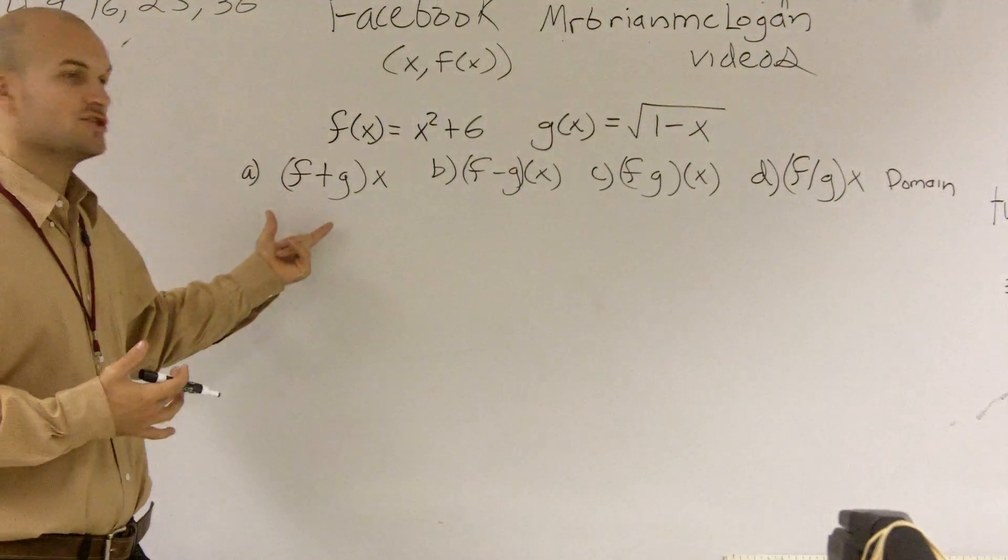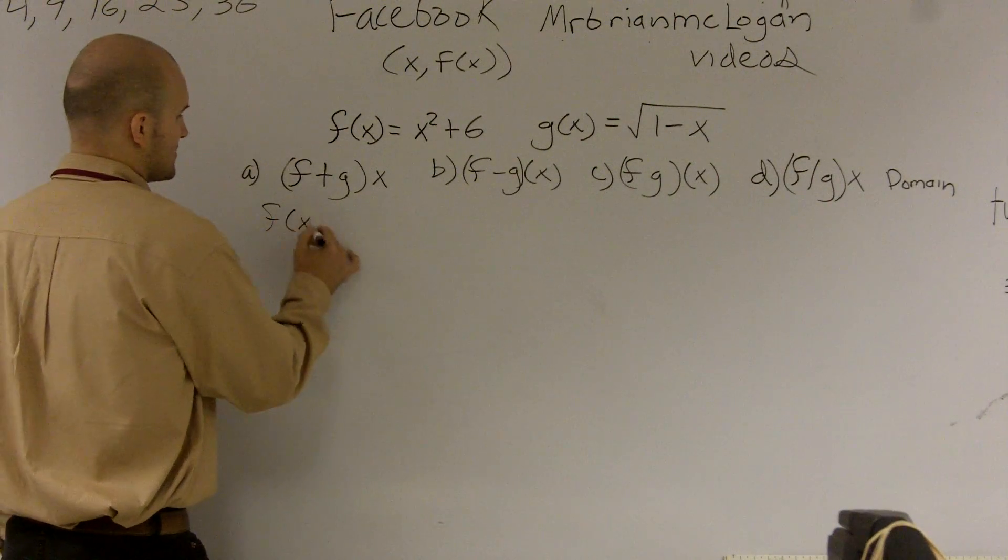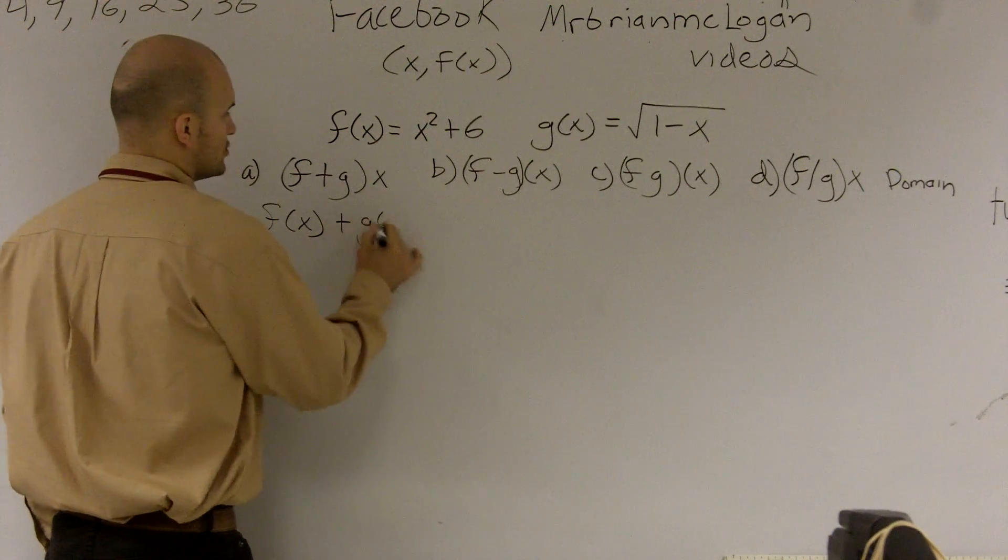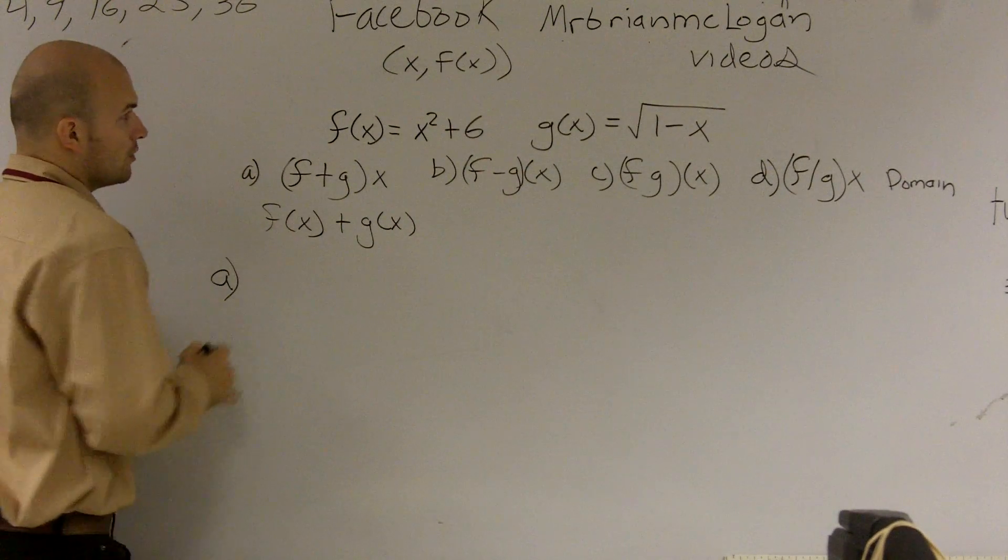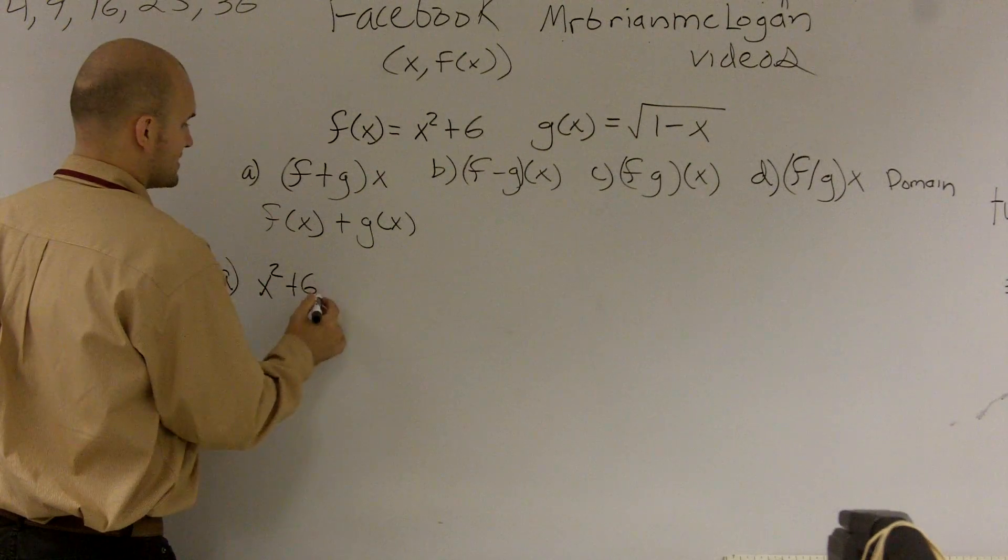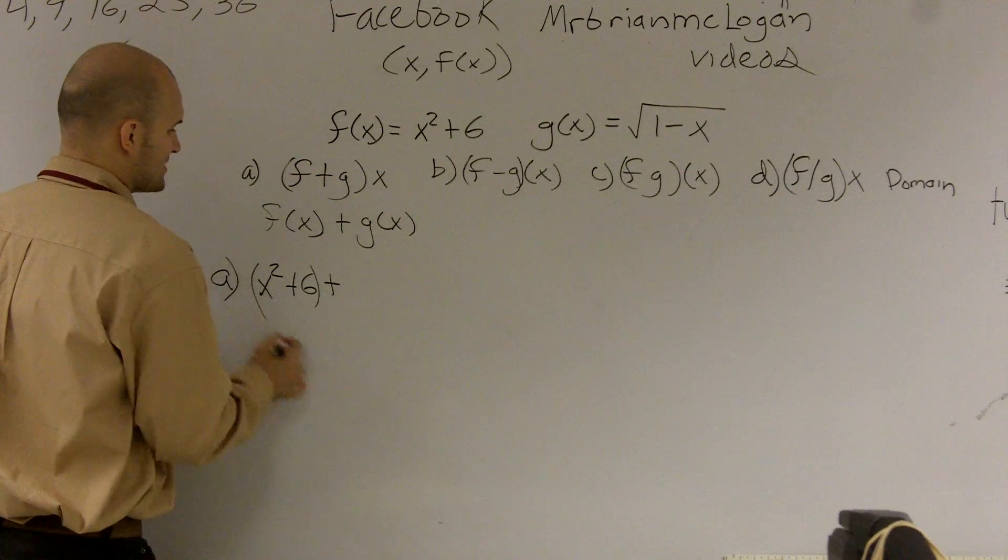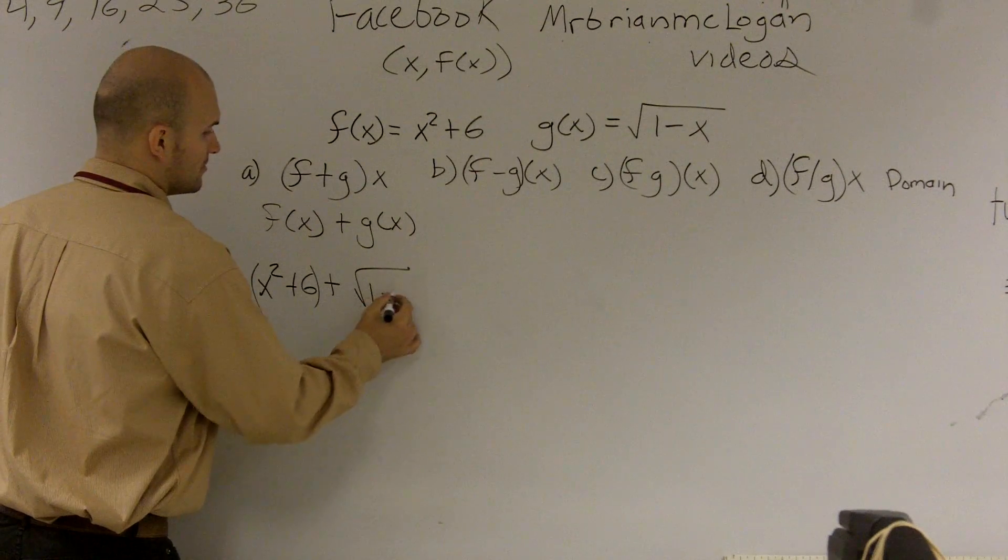First way is we're going to do f plus g of x. So what we have to do is, what this really means is to take f of x and add it to g of x. So for a, what you simply do is you just say x squared plus 6 plus, and I like to put parentheses just to make sure I remember what I'm doing, square root of 1 minus x.